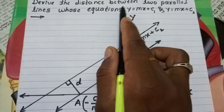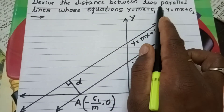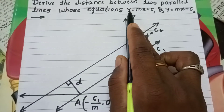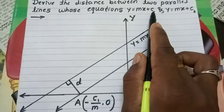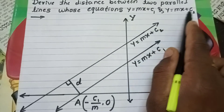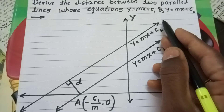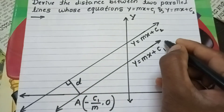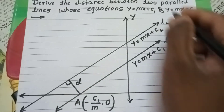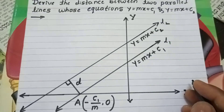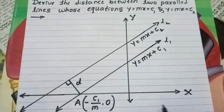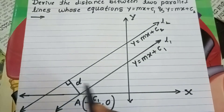We will derive the distance between two parallel lines whose equations are y = mx + c1 and y = mx + c2. L1 and L2 are two parallel lines, and the distance between these two parallel lines is taken as D.